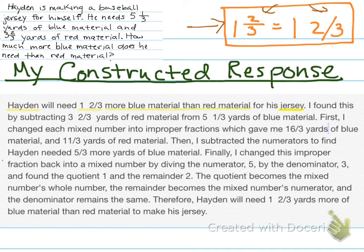Did I explain everything step by step? I did set up this problem first: 3 and ⅔ take away from 5 and ⅓. Did I explain that I changed them into improper fractions? Changed each mixed number into improper fractions. I even stated what those improper fractions were and labeled them.